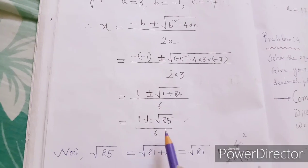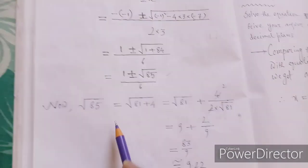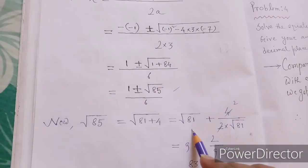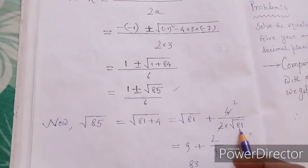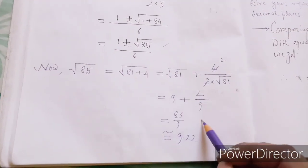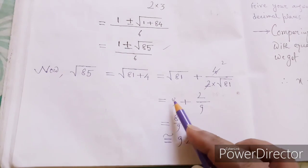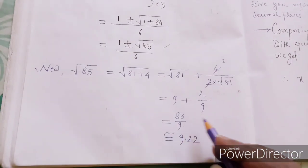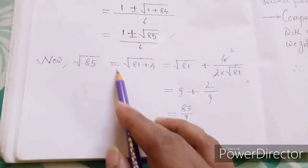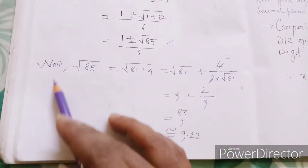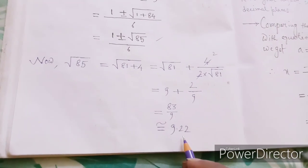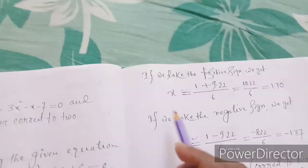We find x = (1 ± √85) / 6. Now √85 can be broken as √(81+4). Using the formula: √(81+4) = √81 + 4/(2×√81) = 9 + 4/18 = 9 + 2/9. That gives (81+2)/9 = 83/9 ≈ 9.22.